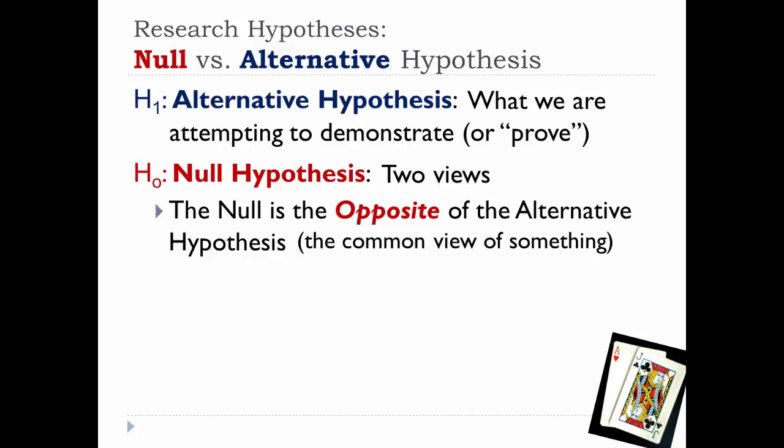Using the card game example, the null hypothesis would be that you are an average card player, the common view, and the alternative hypothesis is that you are a good card player. In this case, the null is not really the opposite of the alternative because that would be that you are a bad card player.